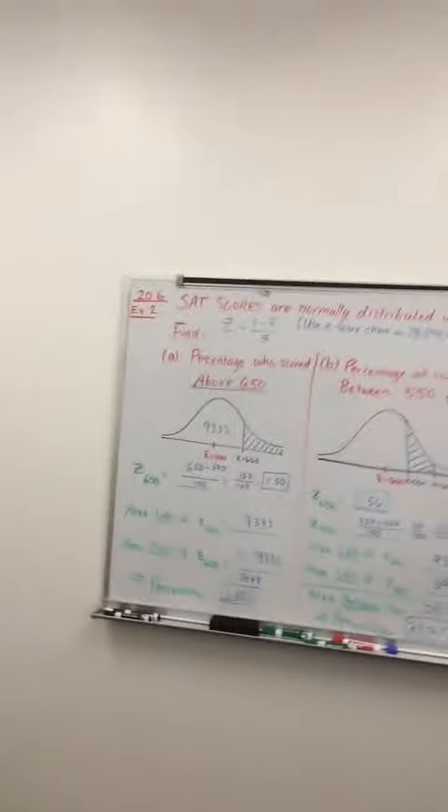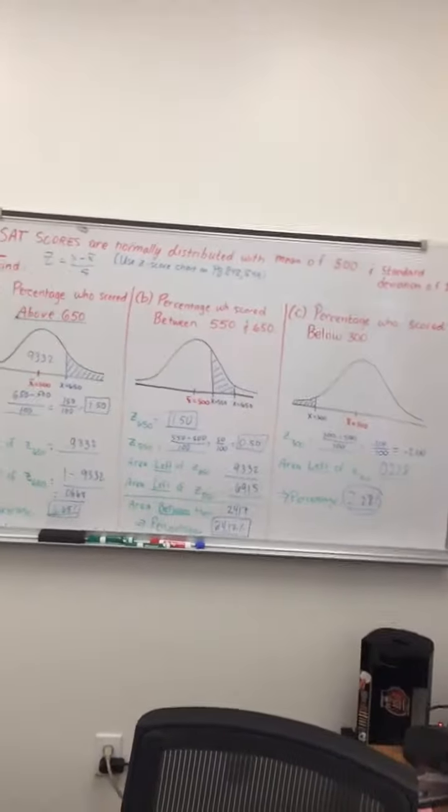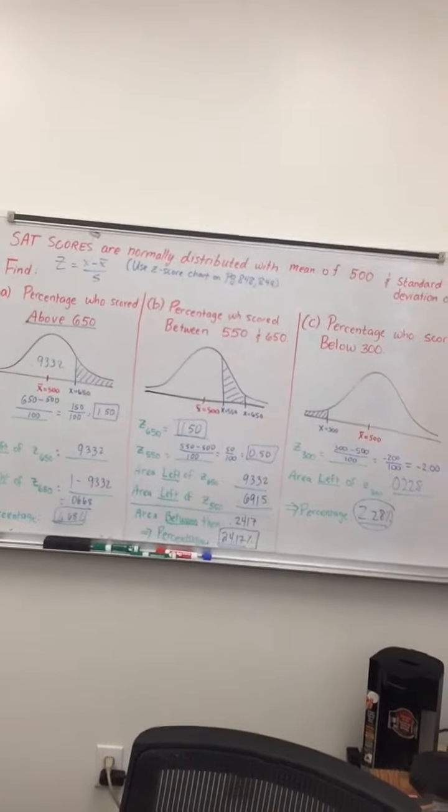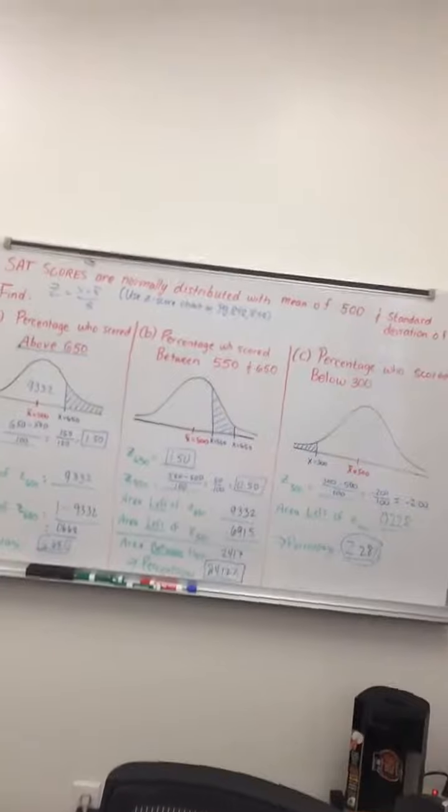Well, I hope that helps make sense using these three examples of how we can use a bell curve and z-scores and a z-score chart to find percentages for normally distributed data.